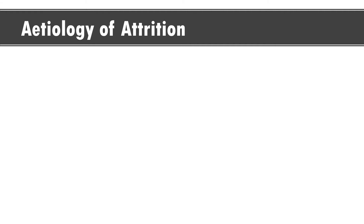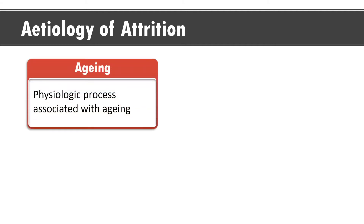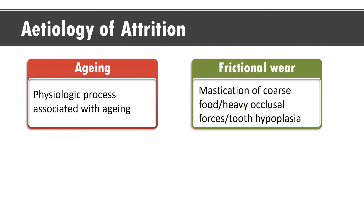Coming to the etiology of attrition. First is aging — attrition is associated with the physiological process of aging, where cusps and incisal edges start flattening as you get older. Then frictional wear: frictional wear of the tooth can result in attrition due to mastication of coarse food, heavy occlusal forces, or tooth hypoplasia. In conditions such as dentinogenesis imperfecta or amelogenesis imperfecta, pronounced attrition can occur even with ordinary masticatory activity.